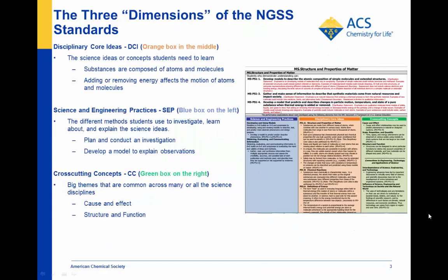The NGSS are built on three components, which they call dimensions. They're disciplinary core ideas here in the orange box, science and engineering practices in the blue box, and cross-cutting concepts in the green. Basically, a shorthand way of looking at it is that the disciplinary core ideas are like the science concepts that students need to know — for example, matter is composed of atoms or molecules.